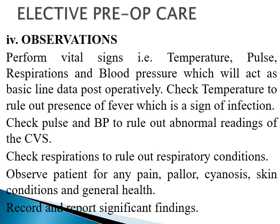The next word O stands for Observations. As a nurse, you are expected to perform vital signs — temperature, pulse, respiration, and blood pressure — which serve as baseline data when the patient returns from the operation. Check temperature, pulse, and blood pressure, and give reasons why you are doing these observations. You should also observe for any pain, pallor, cyanosis, skin condition, and the general condition of the patient. All findings should be recorded, and anything significant must be reported to your superior.